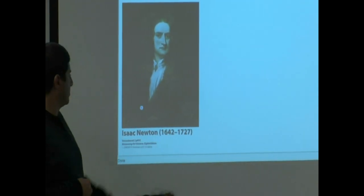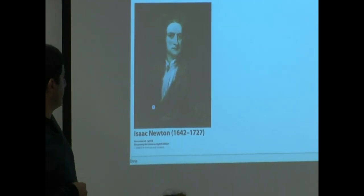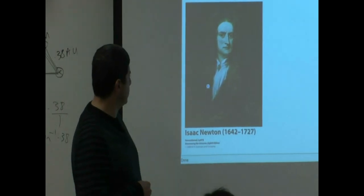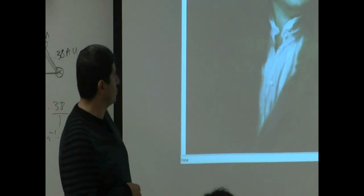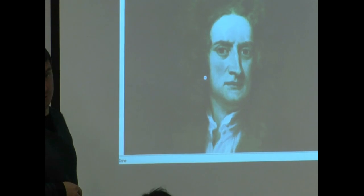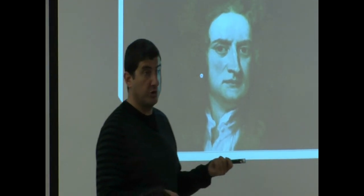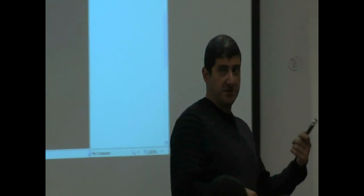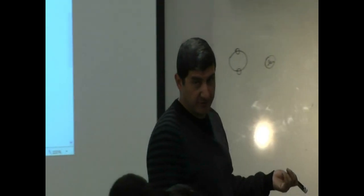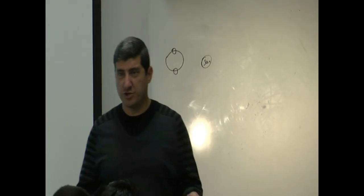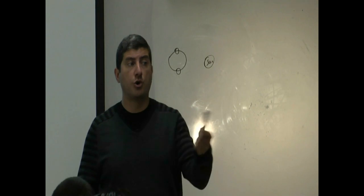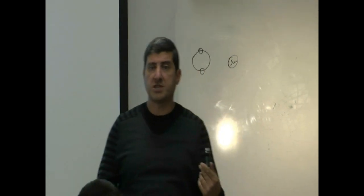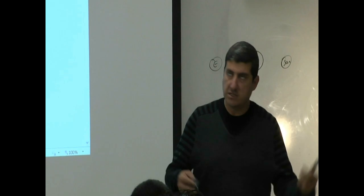There you have it: 1642, the year that Galileo dies, to 1727 — that's Isaac Newton. What did he not do? He was a co-inventor of calculus. He discovered the laws of gravity and laws of motion. He invented the whole field of optics, including the study of prisms and light. Amazing — so much accomplished.